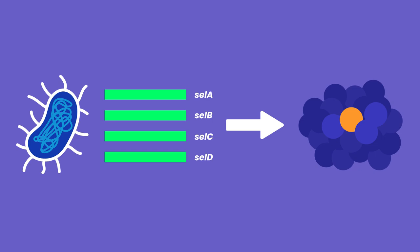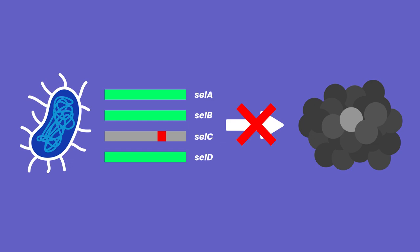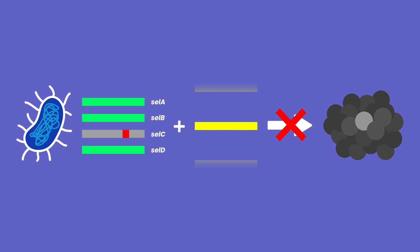They would start with an E. coli cell that had a mutation in one of the genes, so it couldn't create selenoproteins. Then, different fragments of DNA were inserted until they found one that could replace the function of the mutated gene. This is called complementation.